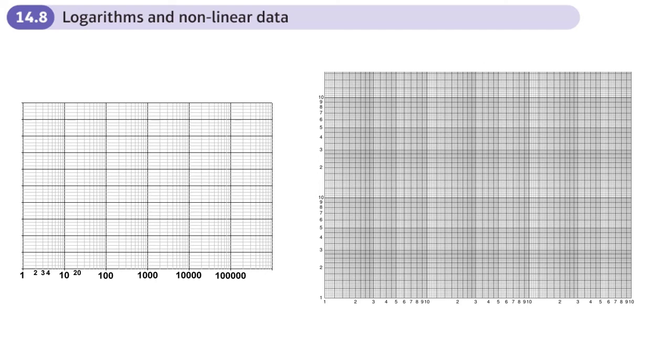This is the last section in the Exponentials and Logarithms chapter, and this is on logarithms and non-linear data. Now there are all sorts of relationships between things which are non-linear, things that have exponential growth. So maybe the number of people catching a virus might be non-linear, or the number of bacteria growing in a bowl might be non-linear.